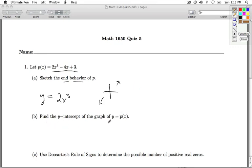Part B, we're asked to find the y-intercept of the graph of y equals P of x. So to find the y-intercept, I'm going to set x equal to 0. The y then is P of 0. I substitute 0 in for x, so I get 3, and so the y-intercept is 0, 3.